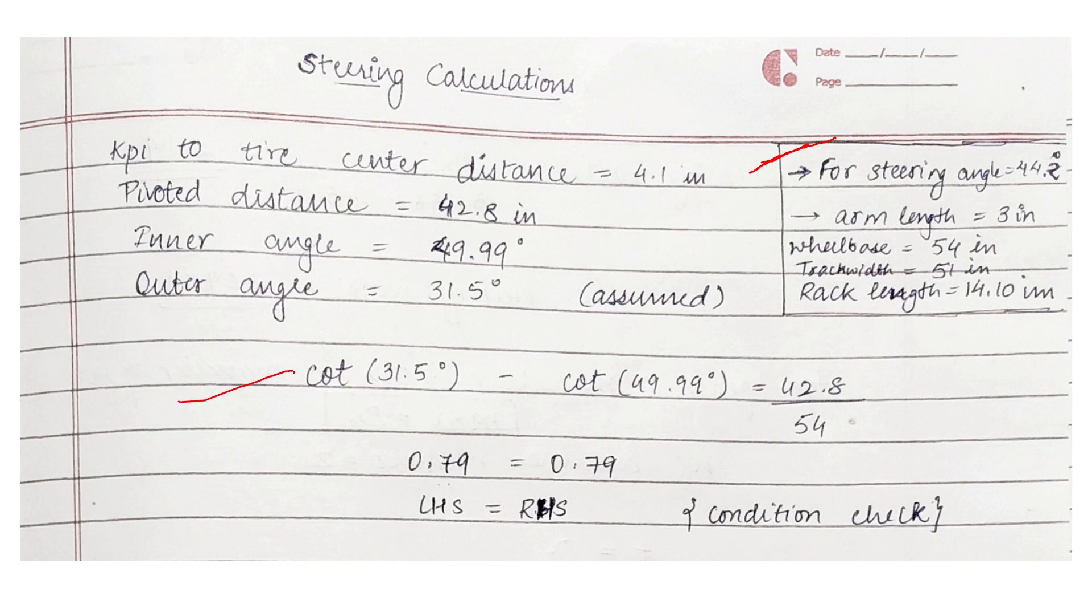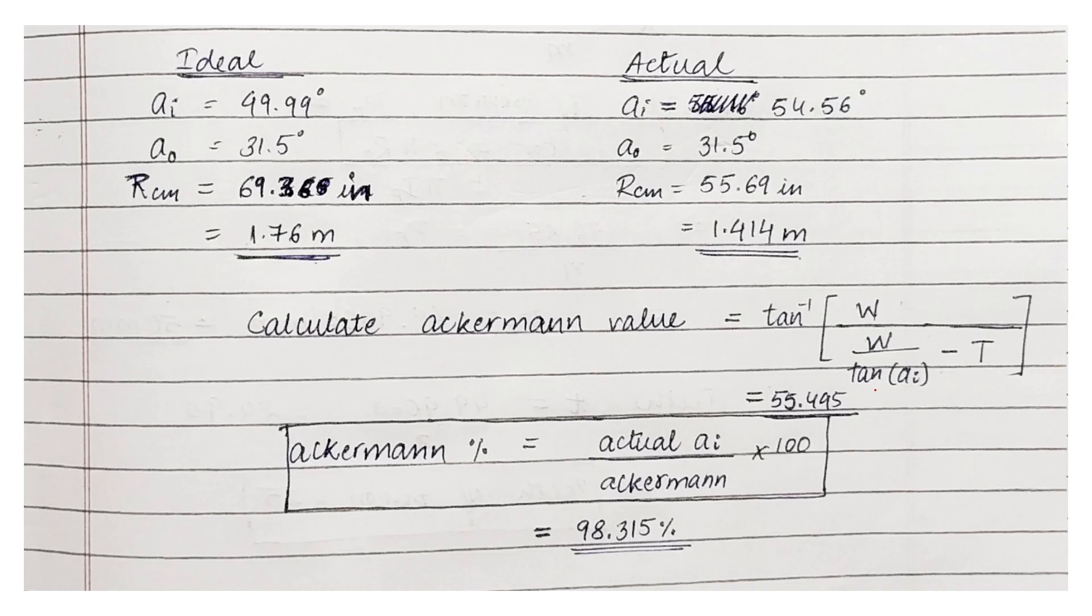From this formula here we can calculate the inner angle. The ideal inner angle for Ackermann for our assumed outer angle that is 31.5 degrees. This condition here checks as we have calculated from this formula. This is the ratio of pivoted distance to the wheelbase. I have attached in the description the Excel sheet of these formulas, and you can simply put the values and get the required other values for the calculation. I will show that after the end of this video.